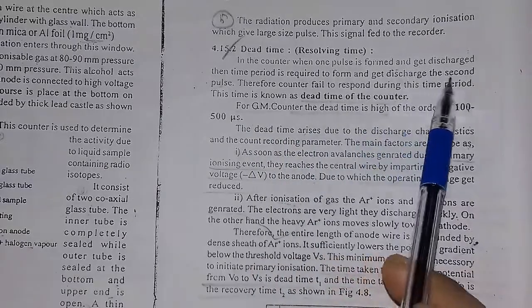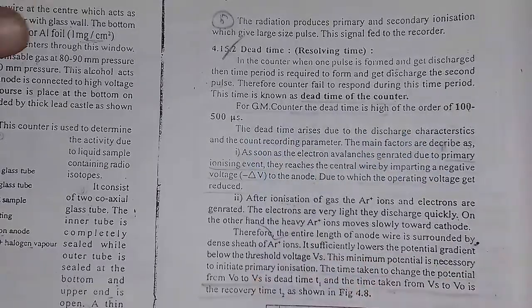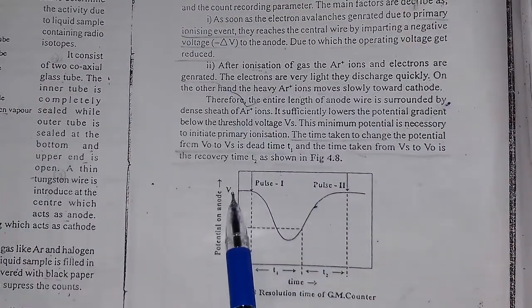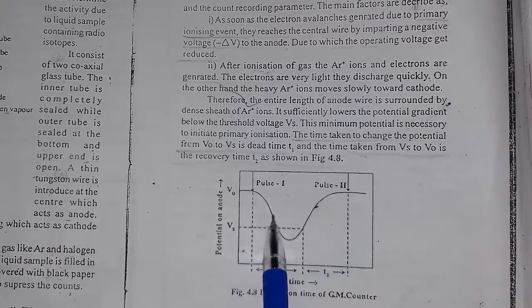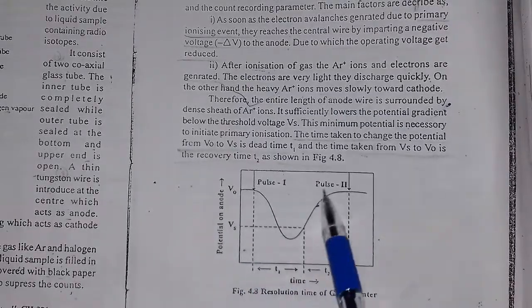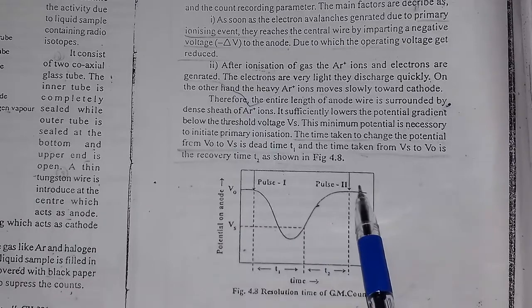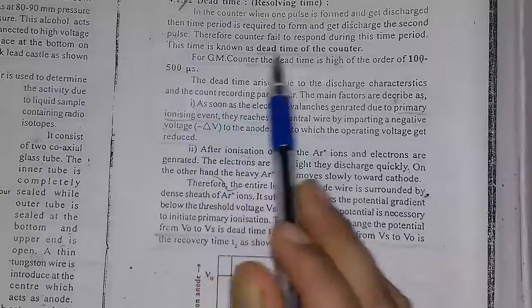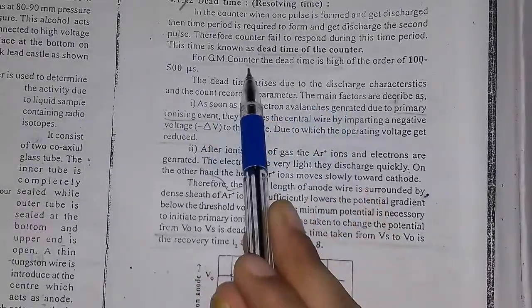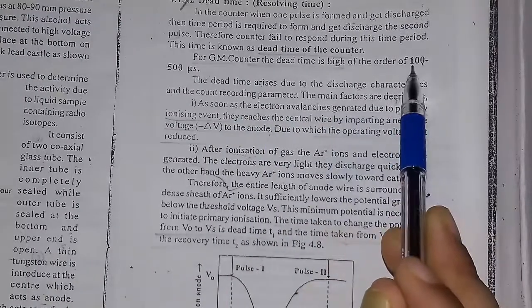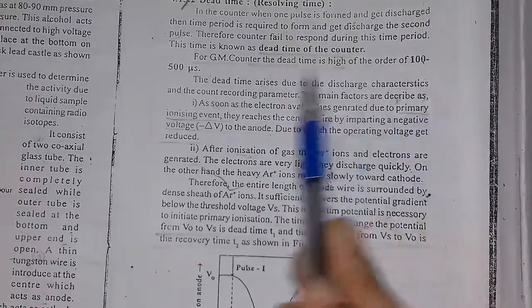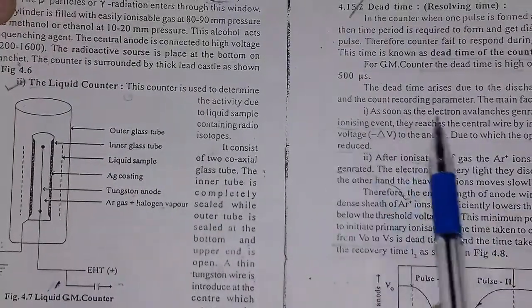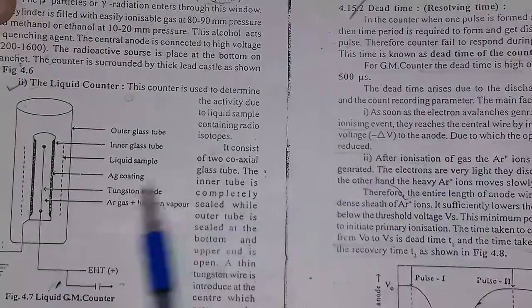We have to take the pulse — you need to get discharge, and the time period required is the dead time. When the counter fails, I will tell you what the dead time of the counter is. The dead time of the GM counter is of high order: 100 to 500 microseconds.